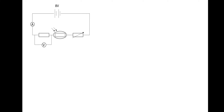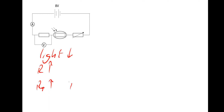Part four: if the light intensity on the LDR decreases, explain what happens to the voltmeter reading. As light decreases, the resistance of the LDR will increase, which means the total resistance of the circuit will also increase, which consequently leads to a drop in total current. In terms of the voltmeter across the fixed resistor — using V equals IR — the fixed resistor's resistance stays the same, but the current drops, therefore the voltmeter reading will also drop.